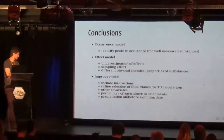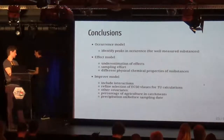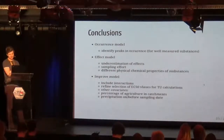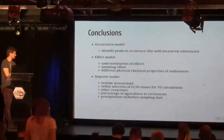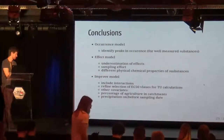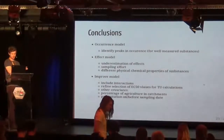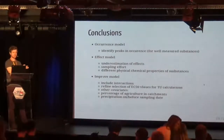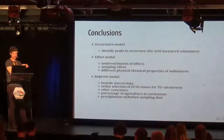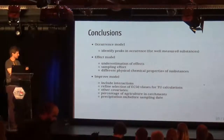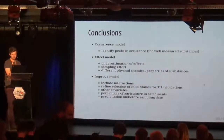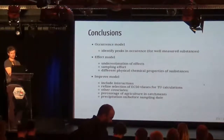The next steps are to continue working on the model, including interactions, and to refine the selection of EC50 values. In the future we also plan to include other covariates, like the percentage of agriculture in or around a stream, or precipitation on or before the sampling date — because pesticides are washed from the fields when it rains.